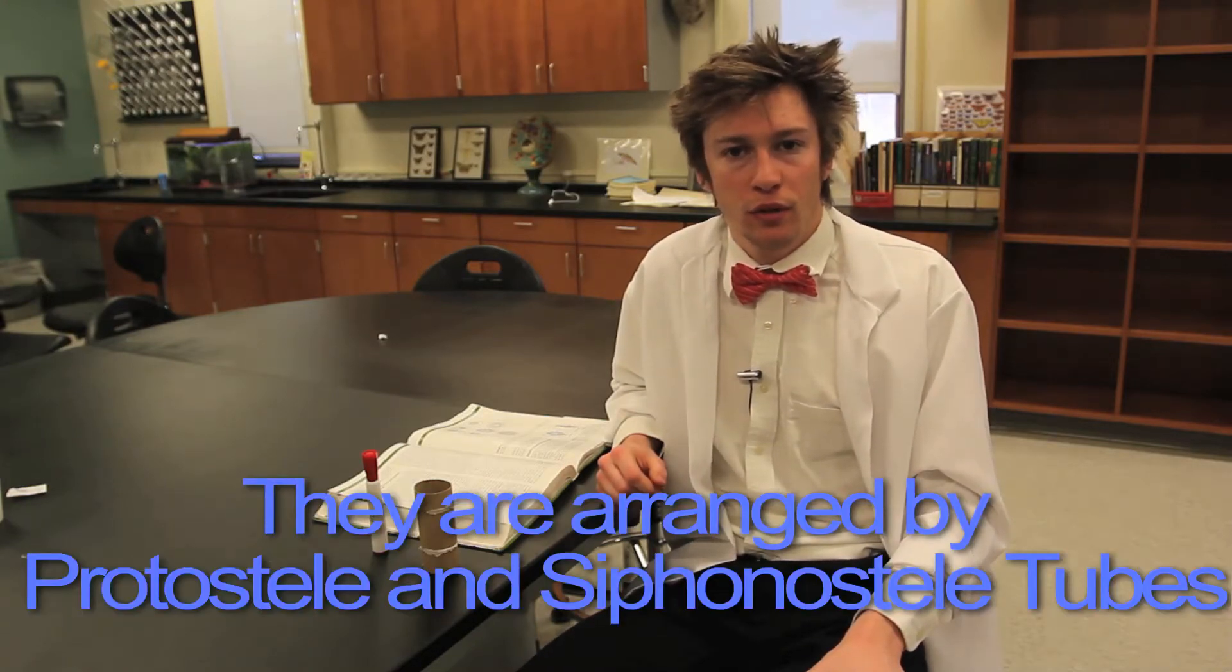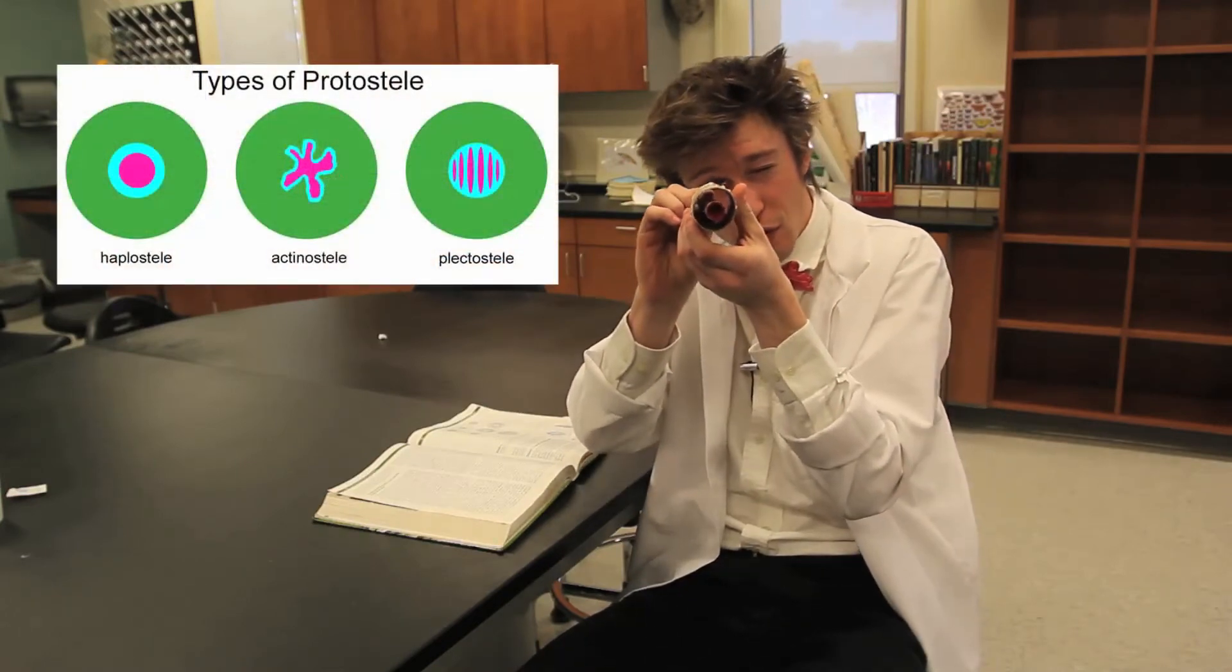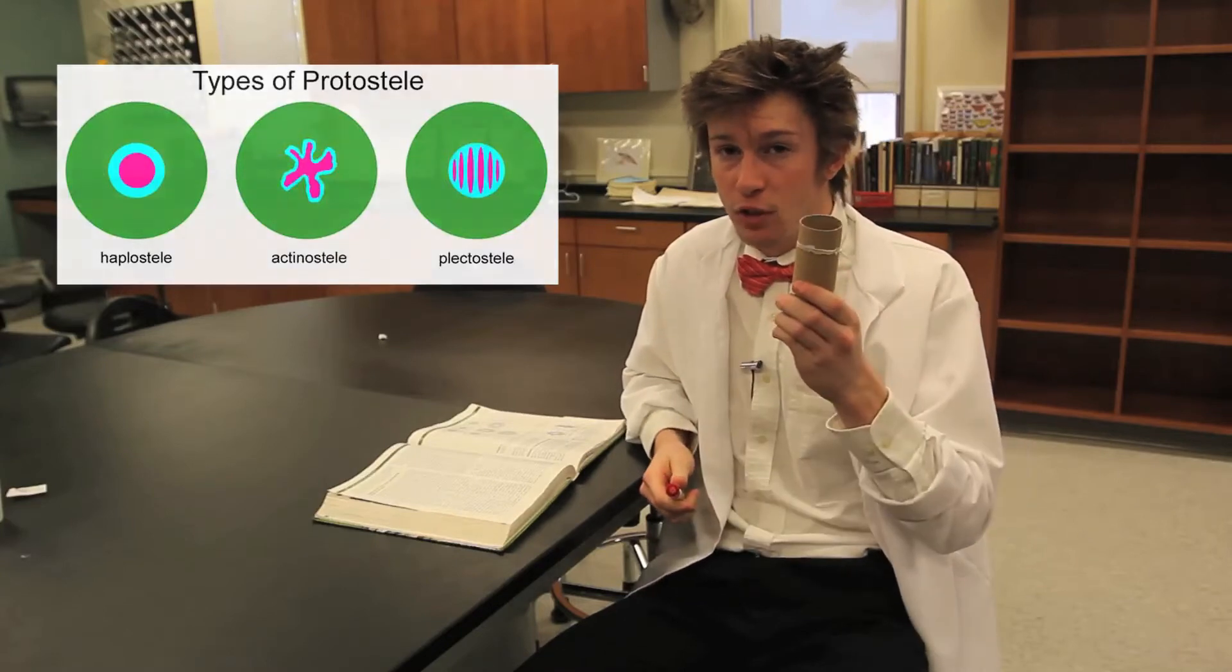By protosteel and siphonosteel tubes. You guys are good. Well, I'll show you how to remember. Picture this is the protosteel. This is a rigid xylem structure in the middle of vascular plants, and this is the phloem that is arranged around the xylem used for vasculation. As for the toilet paper roll, don't ask how I got it.